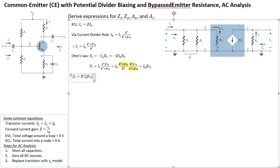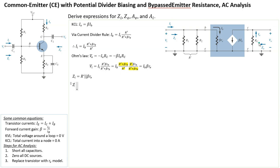For Zo, the output impedance: we zero the input signal source, which connects both nodes to the same potential, meaning ib = 0. When ib = 0, beta*ib = 0 as well, so the dependent current source is an open circuit. Therefore Zo sees only RC, so Zo equals RC.